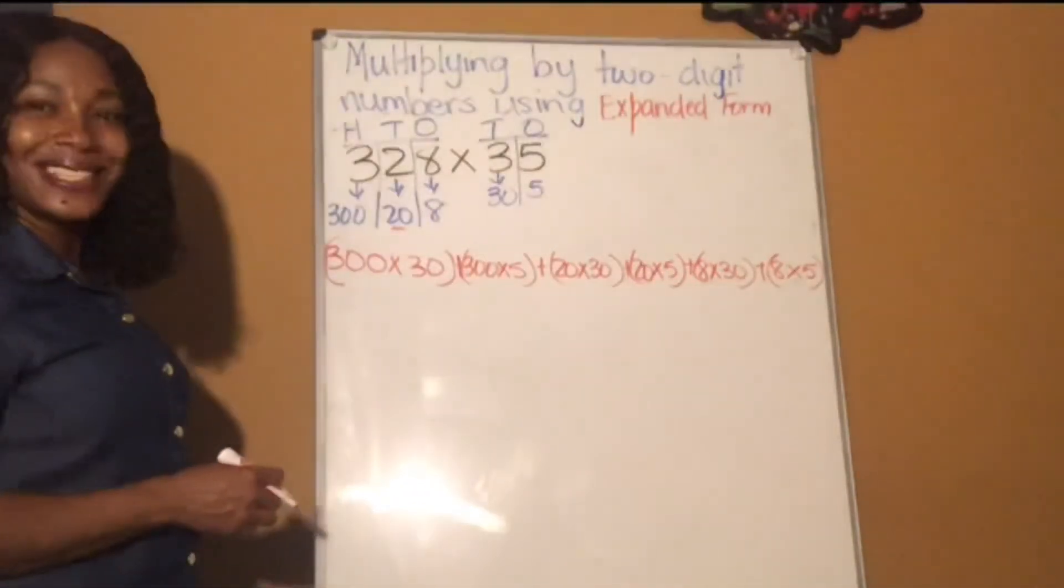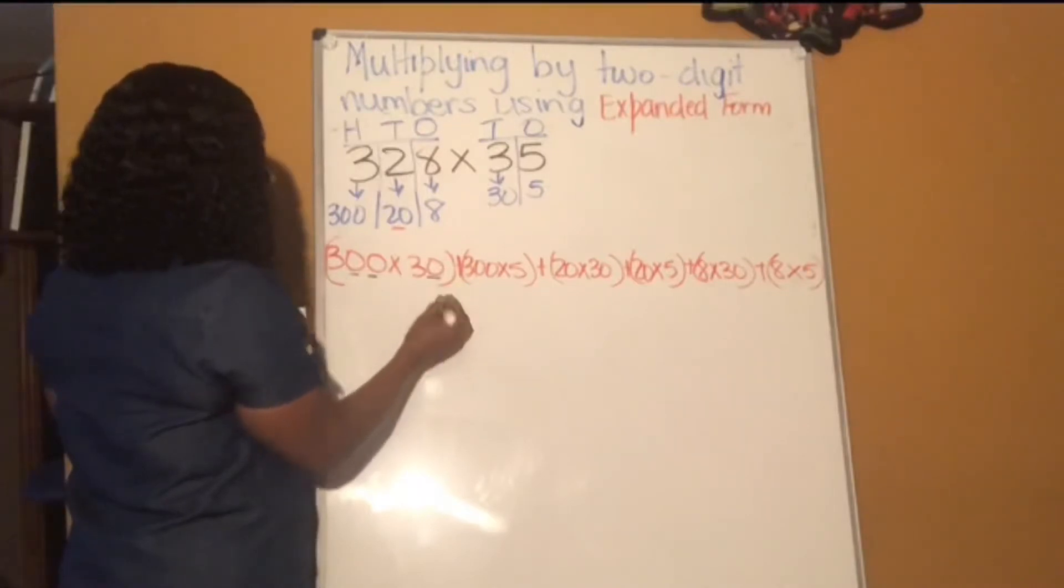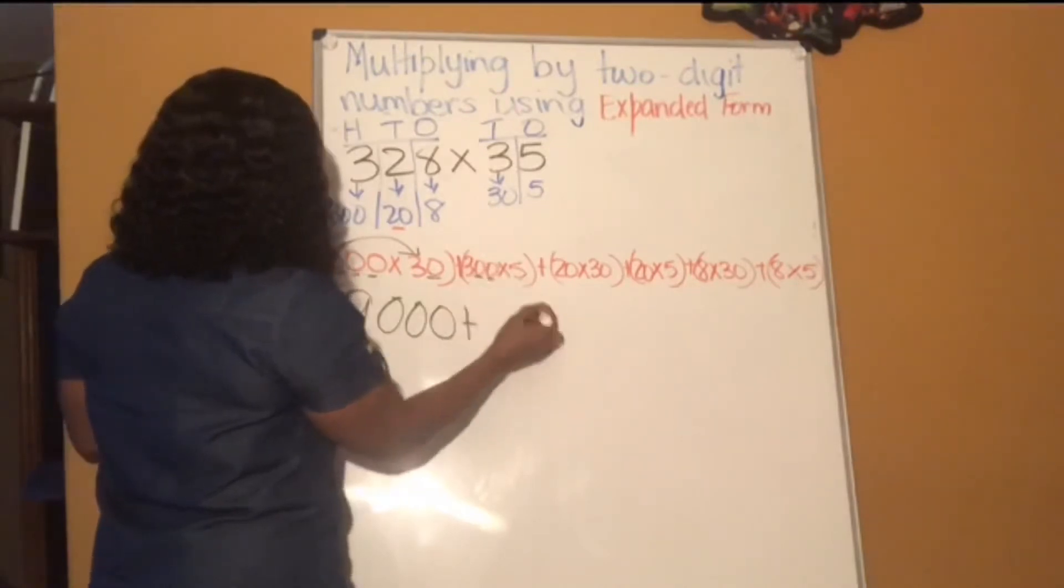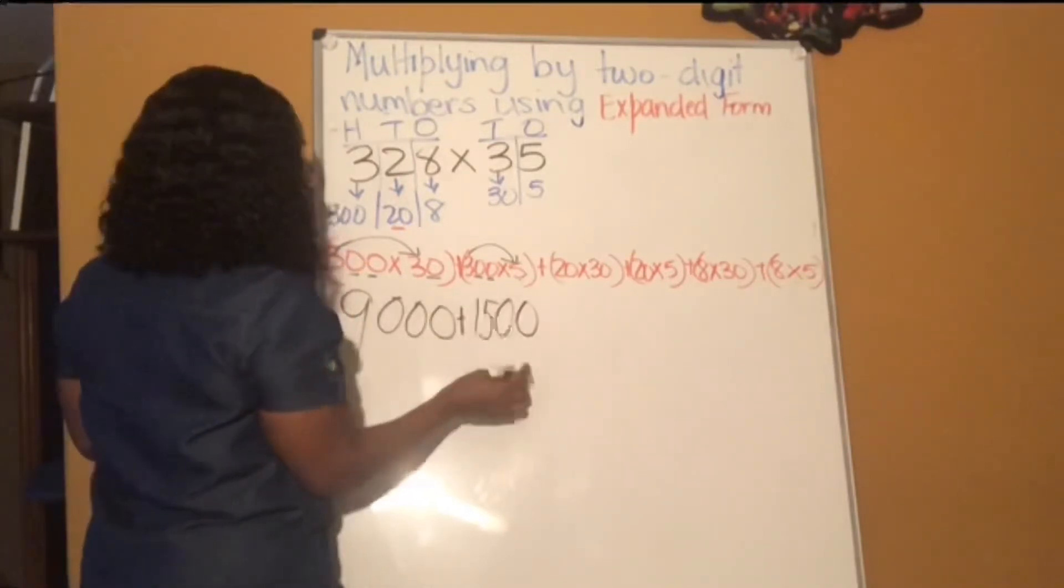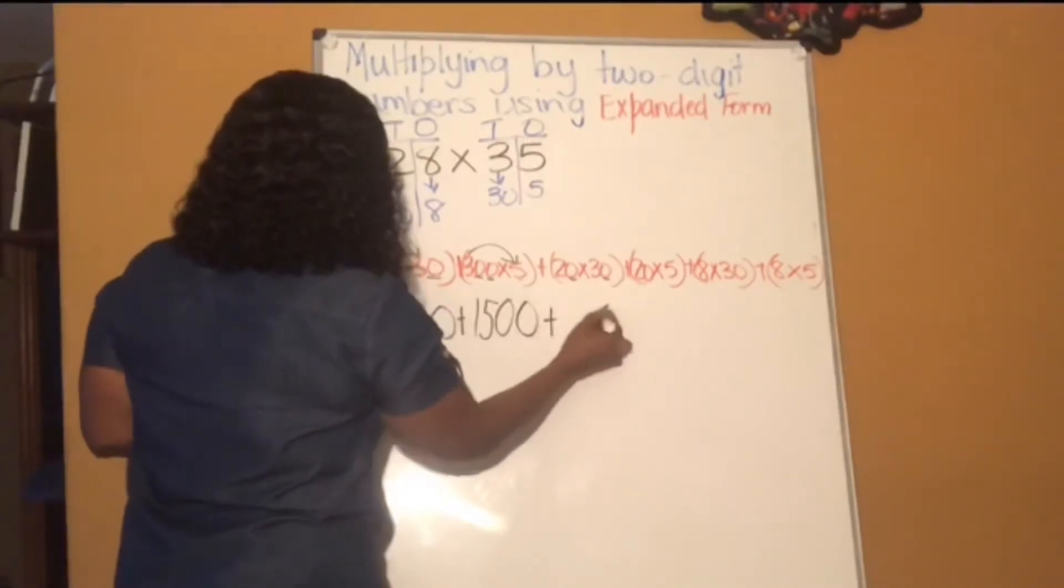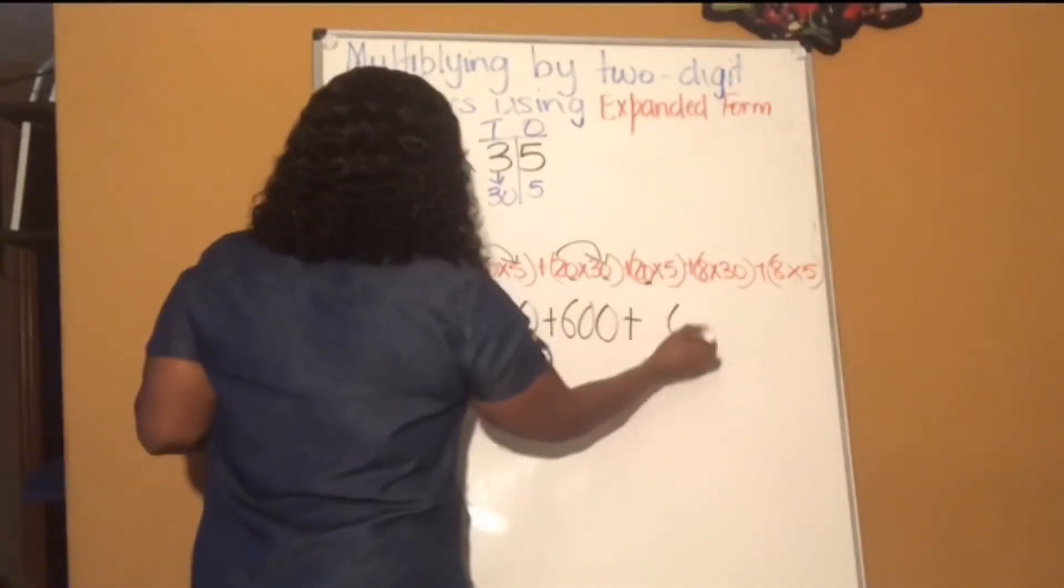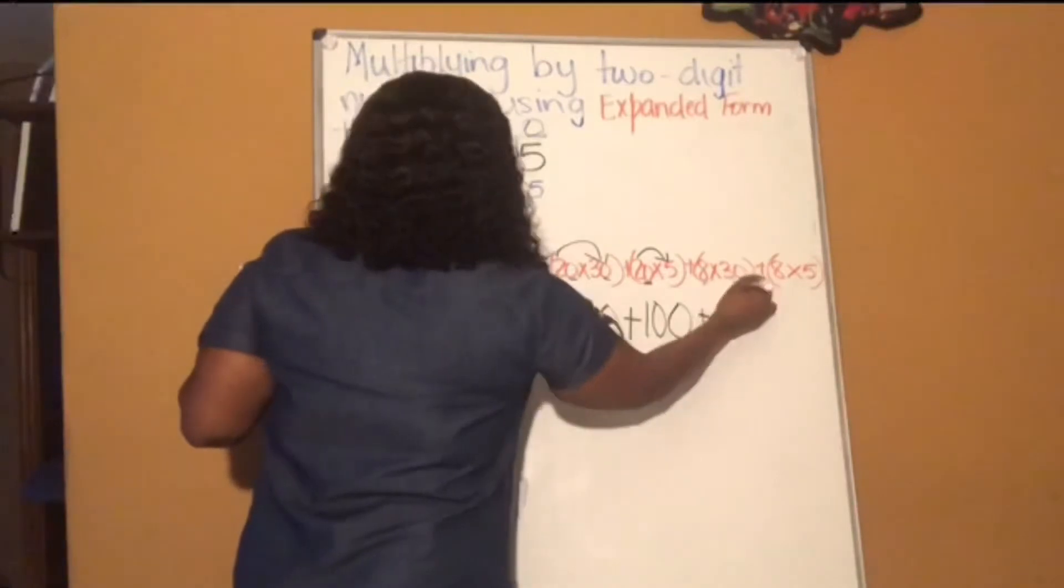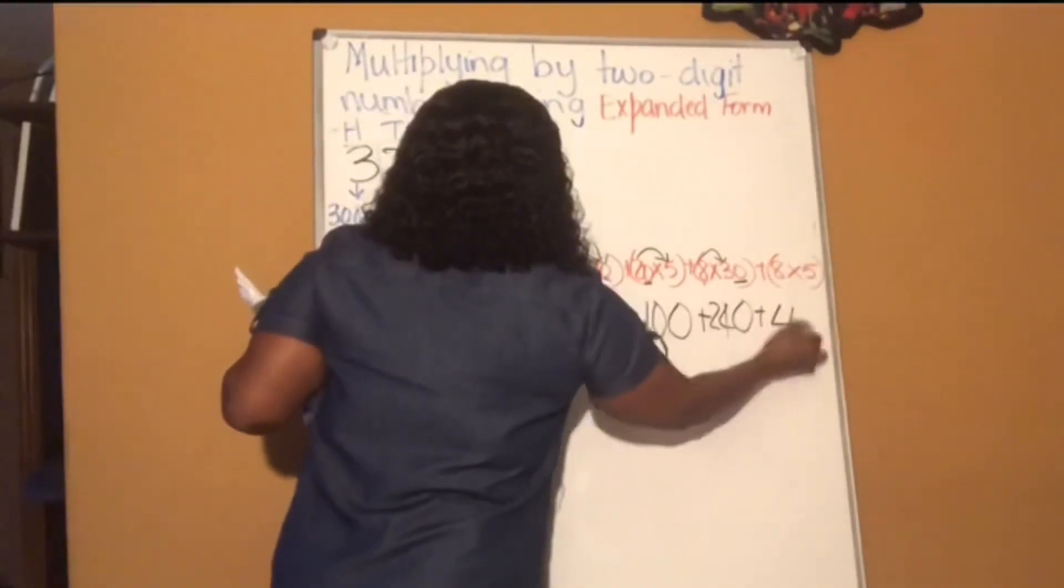Now we're going to work out each bracket. So 300 times 30, 3 zeros, 1 2 3. Then 3 times 3, that's 9. Plus 300 times 5, that's 2 zeros. Then 3 times 5, that's 15. Then 20 times 30, that's 2 zeros. Then 2 times 3, that's 6. Plus 20 times 5, that's 1 0. Then 2 times 5, that's 10. Then 8 times 30, that's 1 0. And 8 times 3, that's 24. Then 8 times 5 is 40.